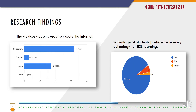Another research finding shows the device that the students use to access the internet. From this graph, it shows that mobile phone is the first choice for the students to access the internet, as the data shows 97% of the students choose to use mobile phones. Followed by laptop, 51.5% of the students choose to use laptop when they access the internet. And then computer, 9.1%.